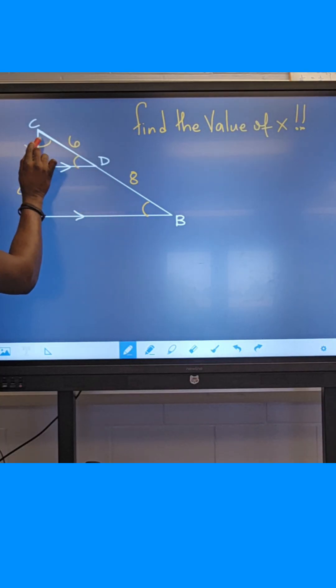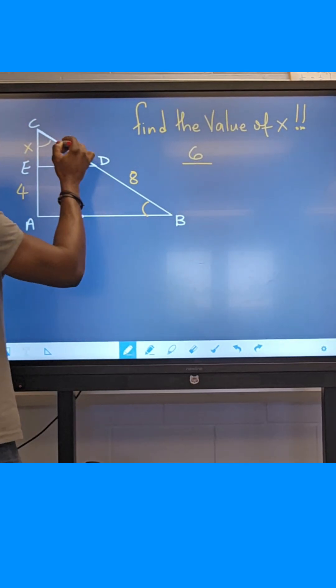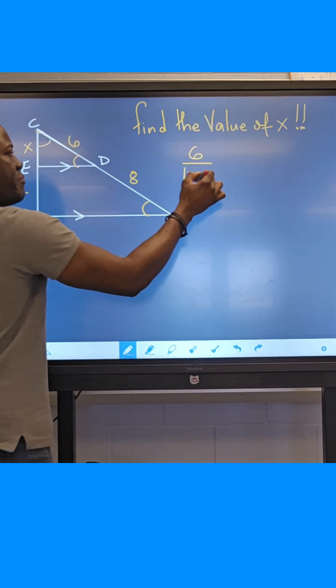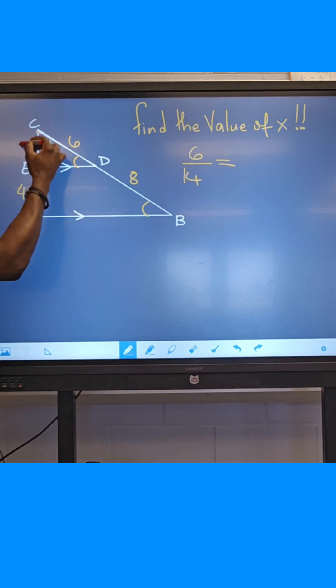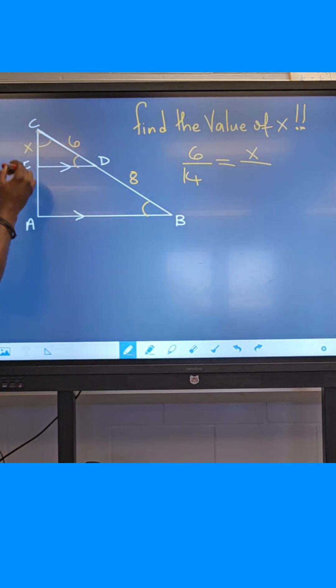If I take 6 and divide it by the whole side, which is 6 plus 8—this is 14—it's gonna equal to linking X to X plus 4, because all of this is X plus 4 right there.